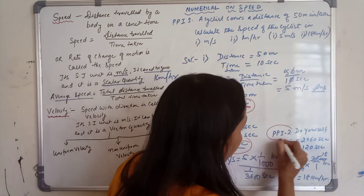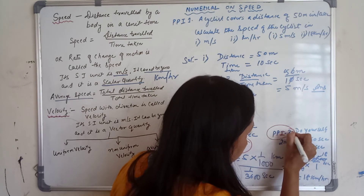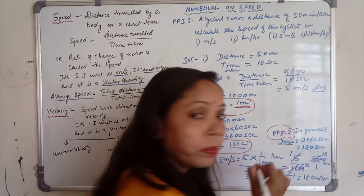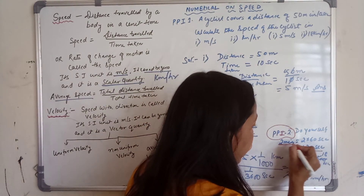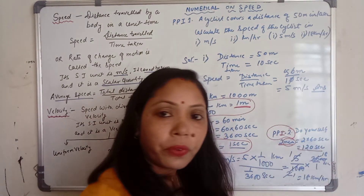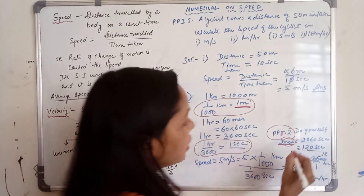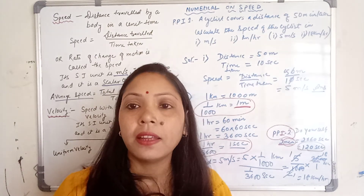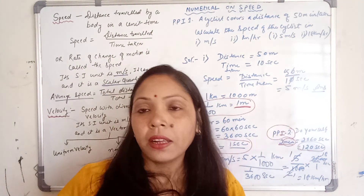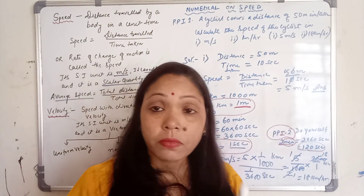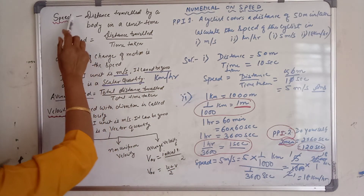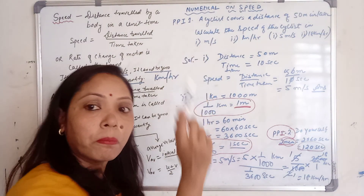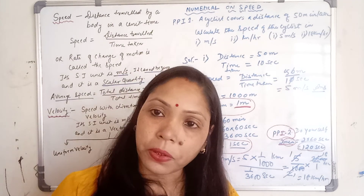In question number 2, you have to do it yourself. The same method as the first question — the only difference is your time is given as 2 minutes. You have to convert 2 minutes into seconds: 1 minute equals 60 seconds, so 2 into 60 equals 120 seconds. After that, use the speed formula to find the first part, and then convert into kilometer per hour for the second part. Write this part in your classwork copy and solve Practice Problem number 1, both parts 1 and 2, as your assignment.